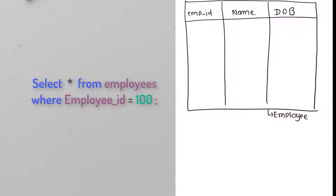For that I need to draw one employee table. As you can see on the screen, I have drawn an outline of the employee table. The columns are emp_id, name, and date_of_birth — these are the three columns available in the employee table.